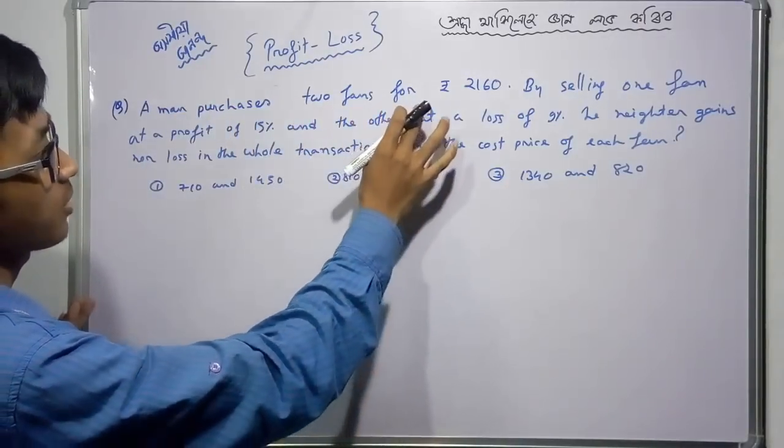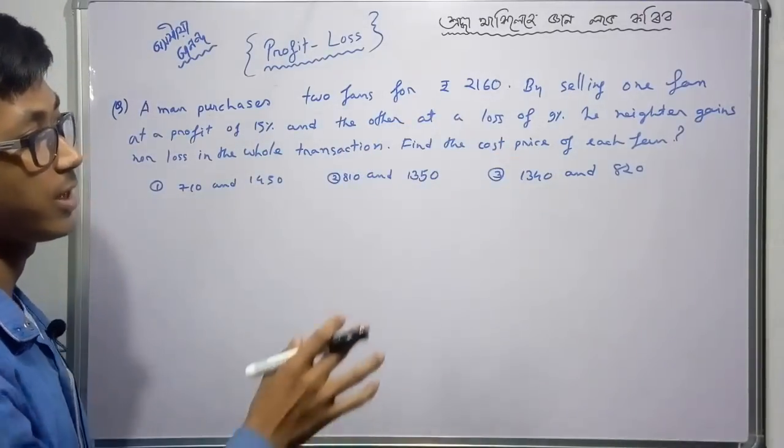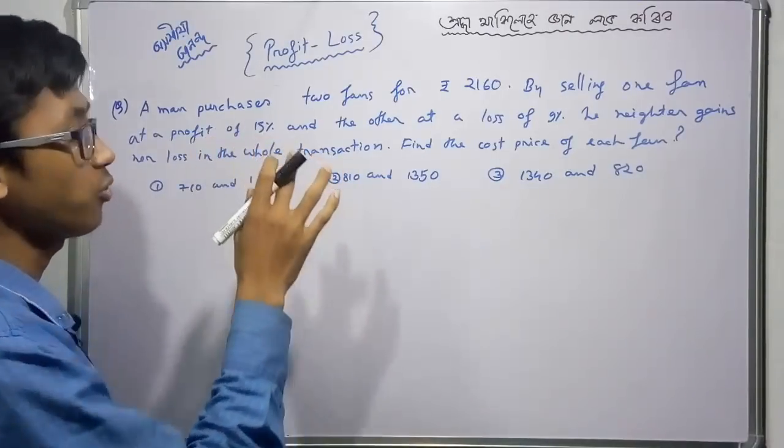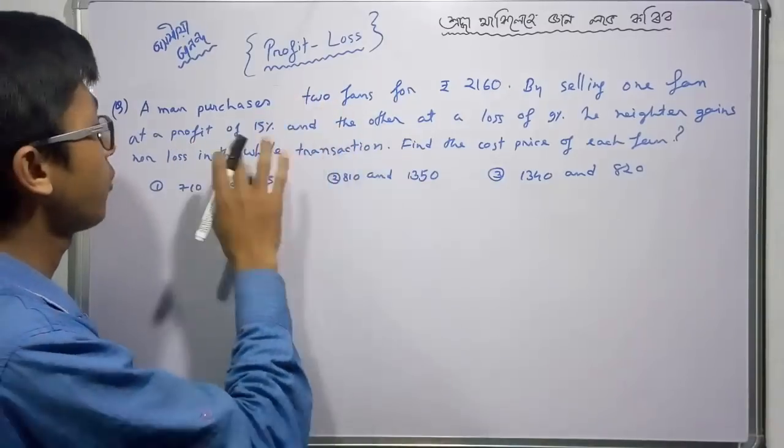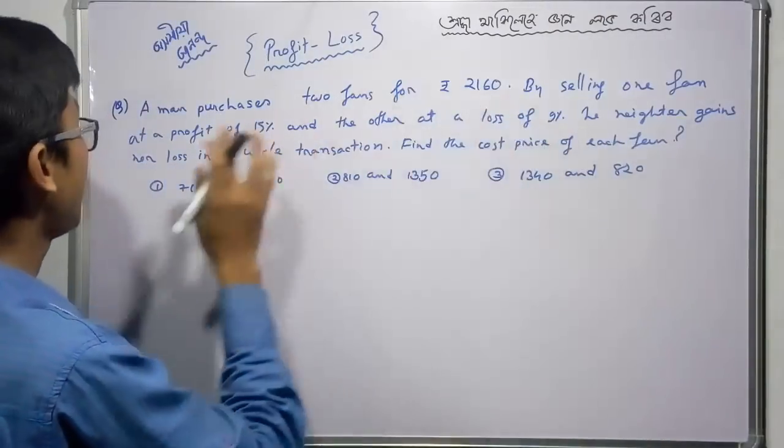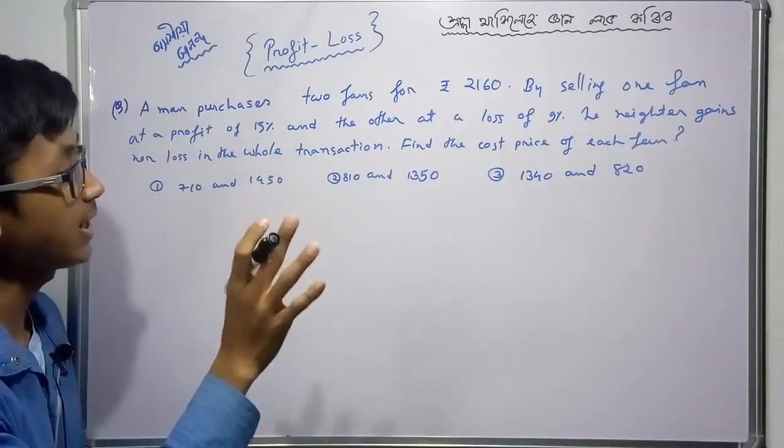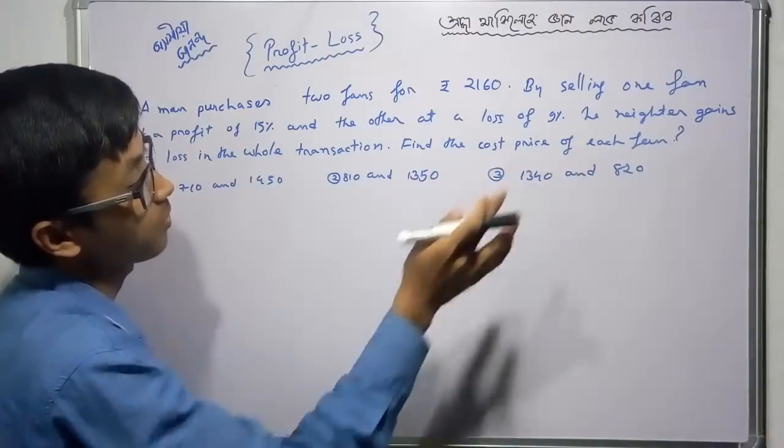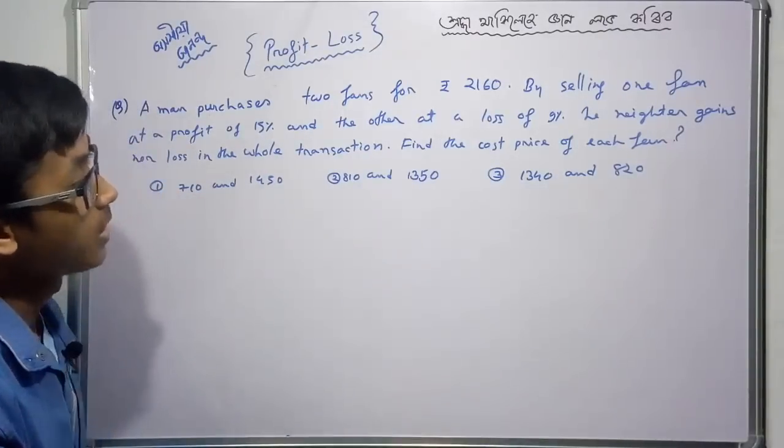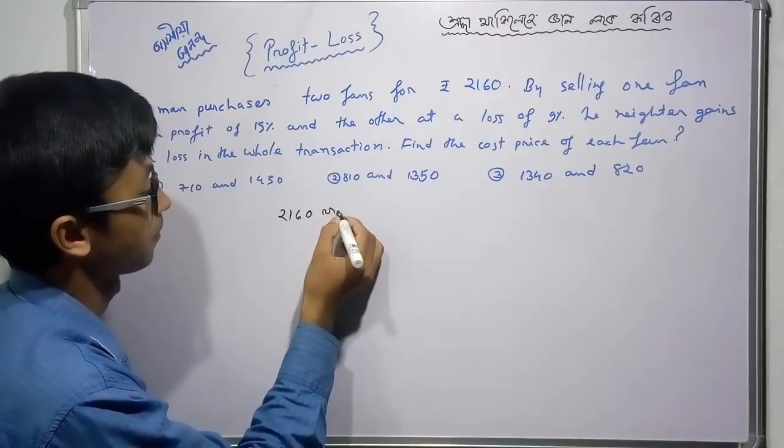A man purchased two fans for Rs. 2160. By selling one fan at a profit of 15% and the other at a loss of 9%, he neither gains nor loses in the whole transaction. Find the cost price of each fan. Let me work through this problem using the concept of ratios.